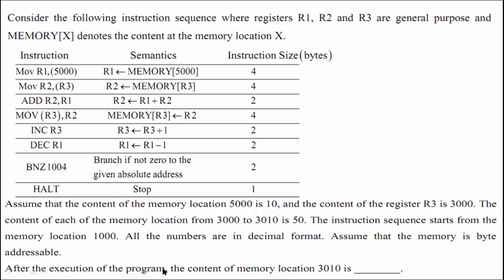After the execution of the program, what is the content of memory location 3010? This is the question. To find out, we should dry run the program and understand what the contents of the registers and memory locations are initially, and how they get manipulated after the execution of each instruction.